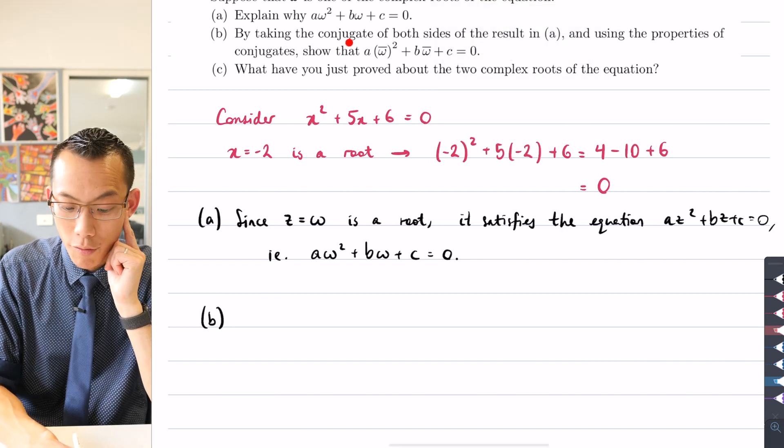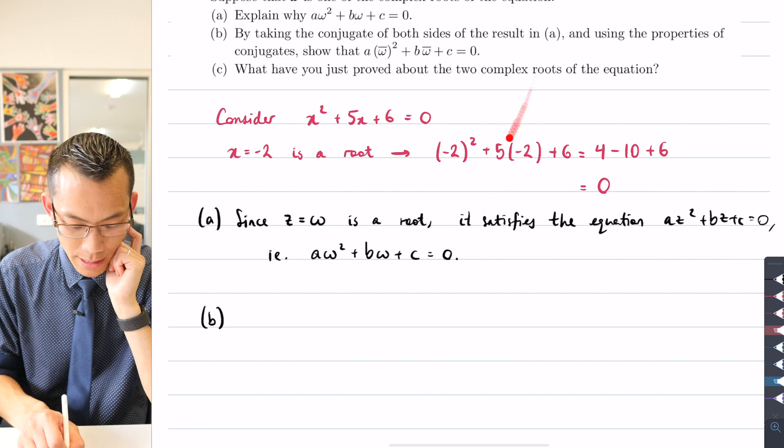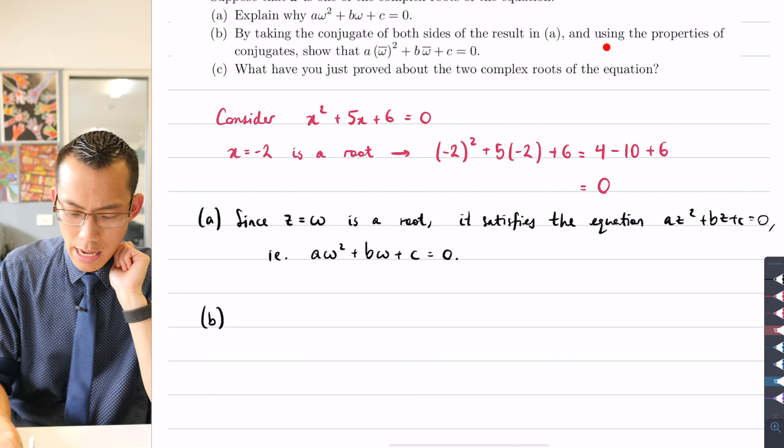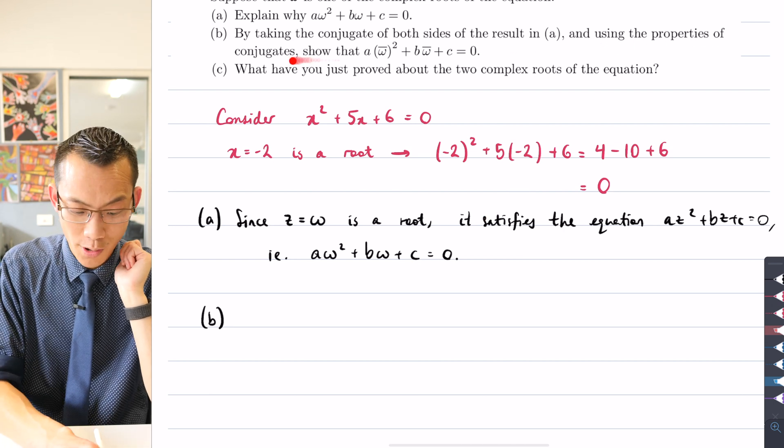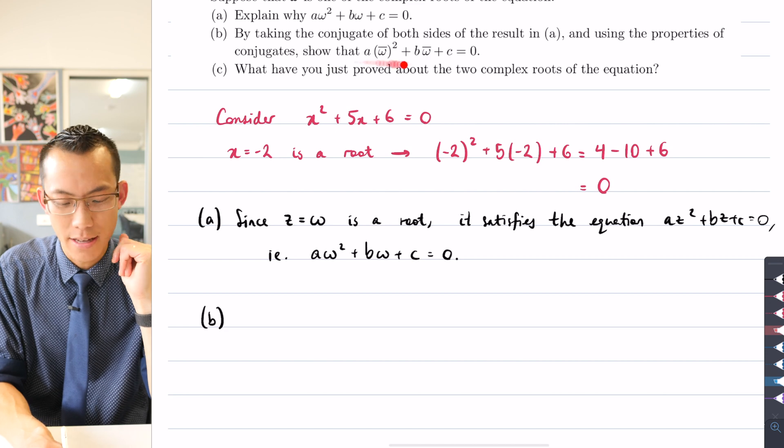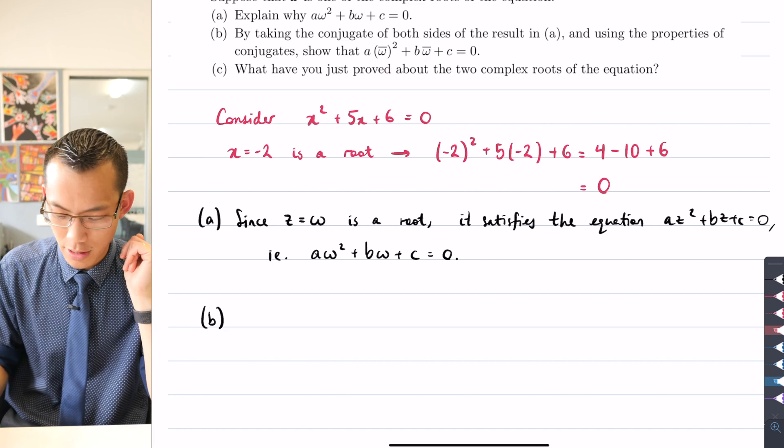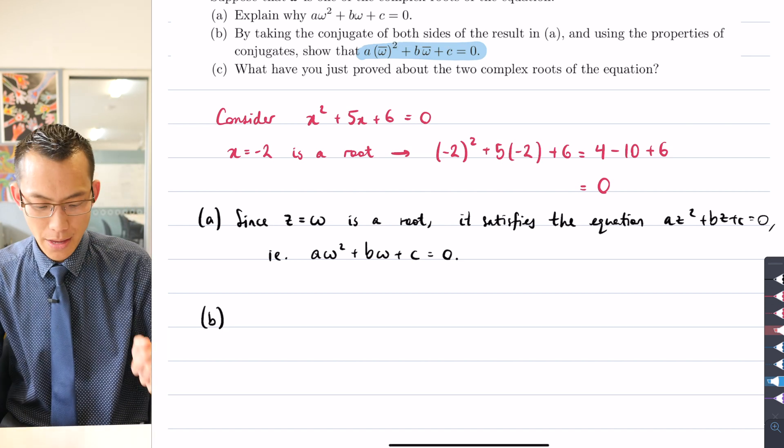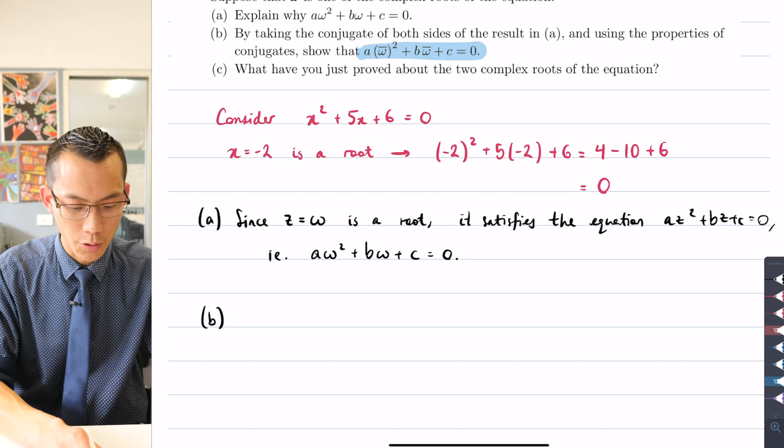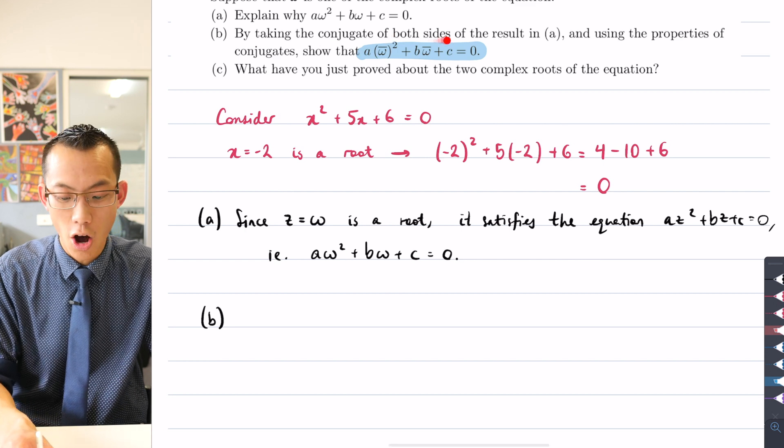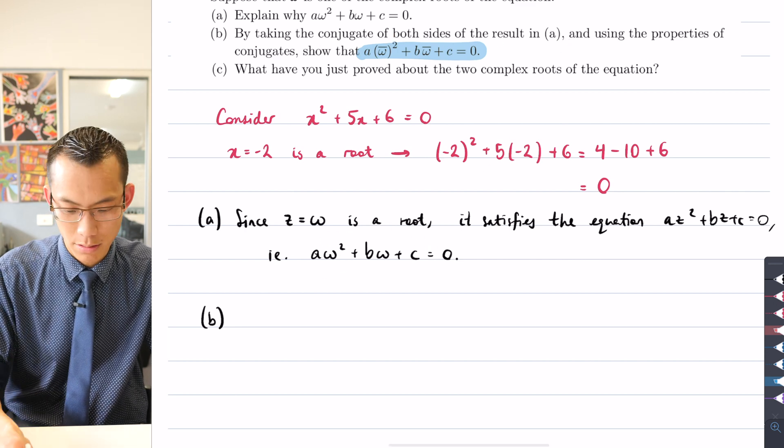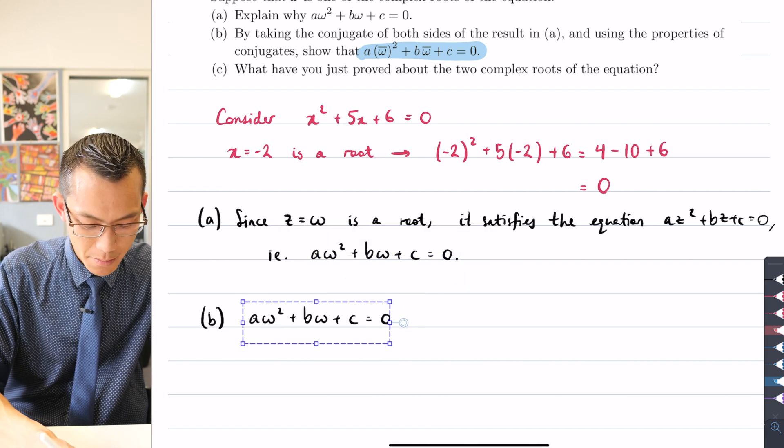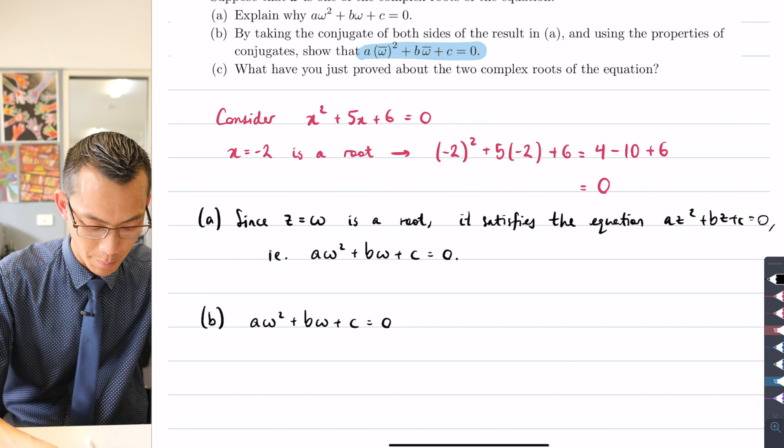It says by taking the conjugate of both sides of the result in (a)—so this is the result in (a)—they're asking us to take the conjugate of both sides and using the properties of conjugates, whatever that means, show that... and then there's this result here. So let's have a think about this. This is where we want to end up, and where we're going to begin is in the first half of the question. It says by taking the conjugate of both sides of this result. So let's see what happens when we do that. Here is the result from part (a).